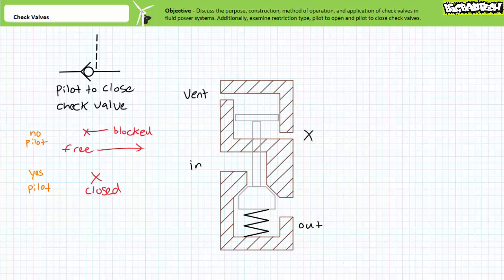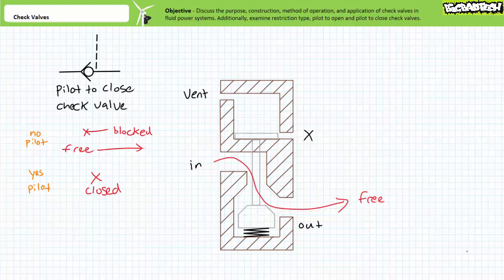A pilot to close check valve can be created using our same diagram by simply swapping the pilot and vent ports. In the absence of pilot pressure, the pilot to close check valve acts just like a regular check valve. In the block direction, the poppet is forced onto the seat and fluid flow stops. In the free flow direction, the poppet is forced off its seat and fluid flows unrestricted through the valve.